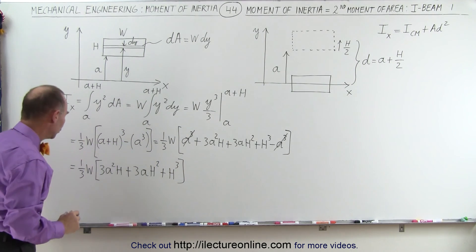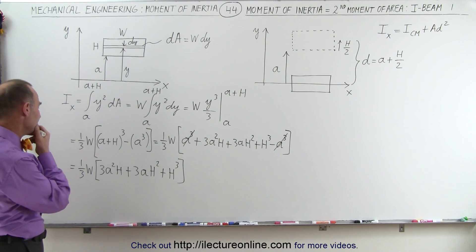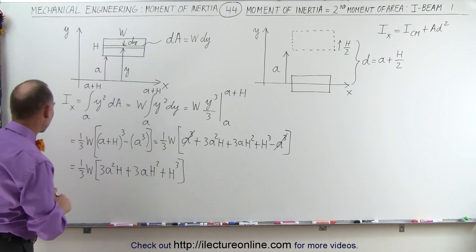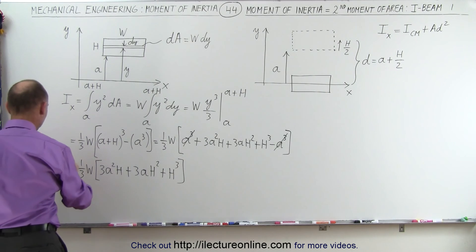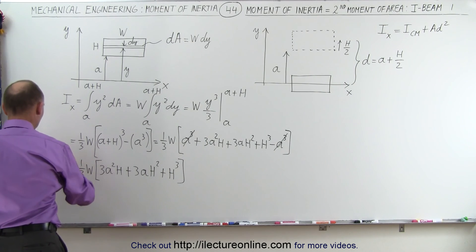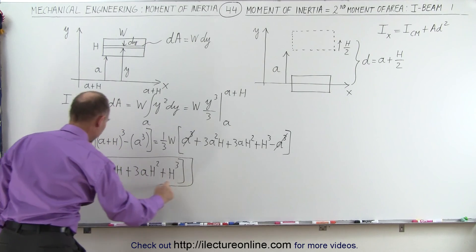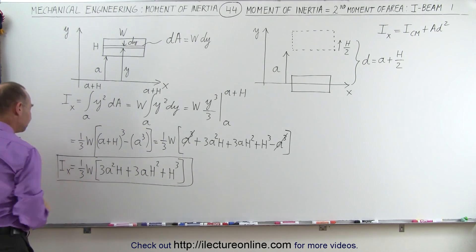So the moment of inertia relative to the x-axis is one-third W times (3A²H + 3AH² + H³), where A is the distance to the bottom of that flat portion of the beam and H is really the thickness of that beam. We'll leave it like that — that's good enough.